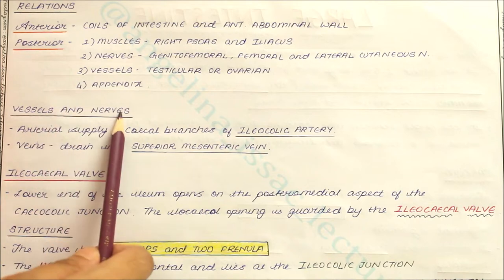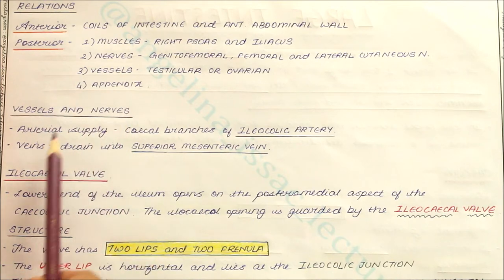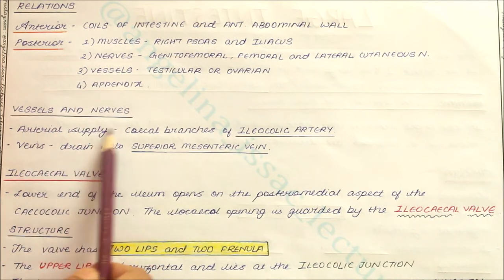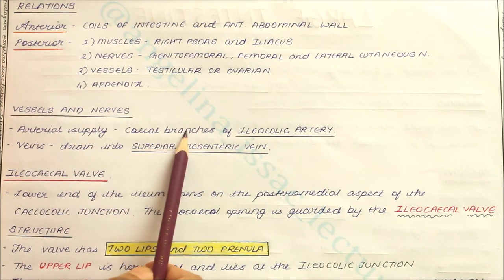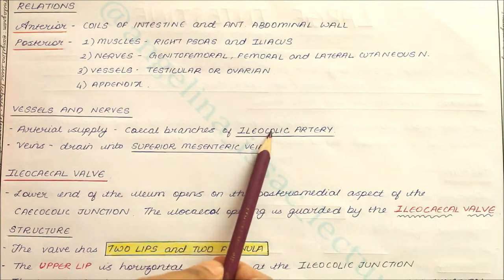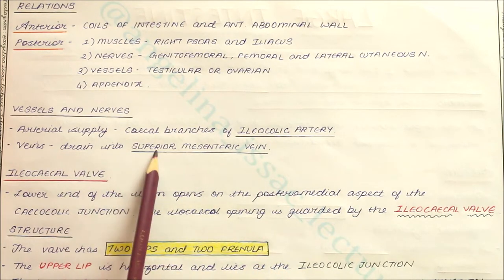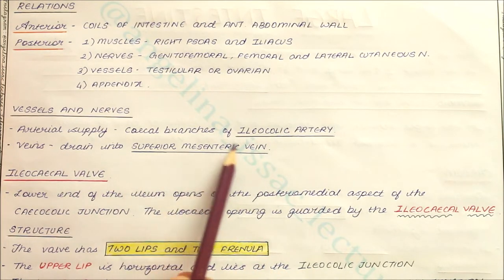The vessels supplying the cecum: the arterial supply is by the cecal branches of the ileocolic artery, and venous drainage is into the superior mesenteric vein.